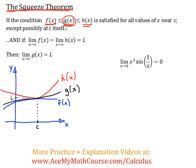So in other words, g of x is always between h of x and f of x, for all values of x near c. In this case, this is our c right here, except possibly at c itself.